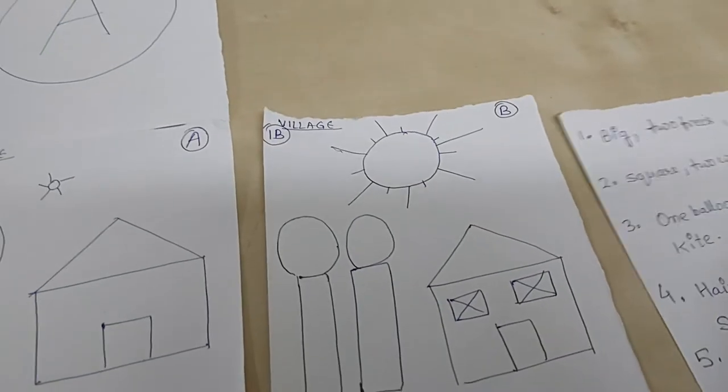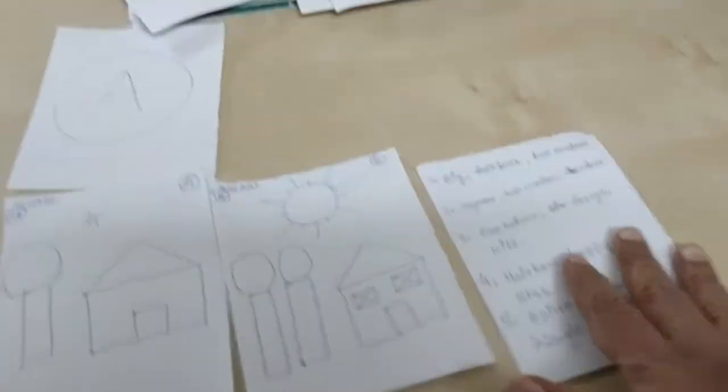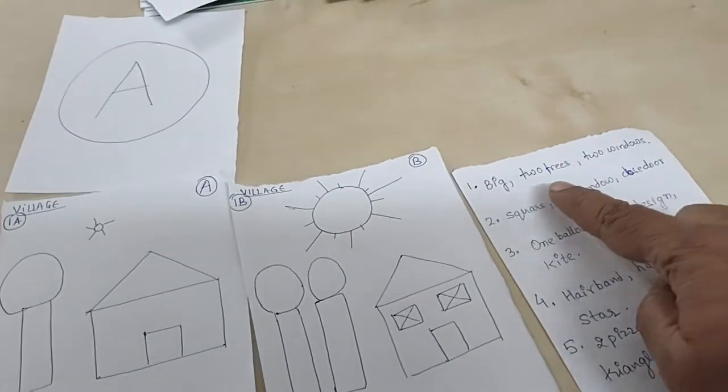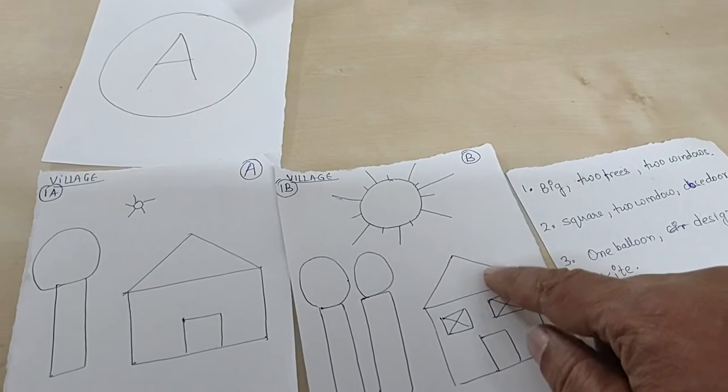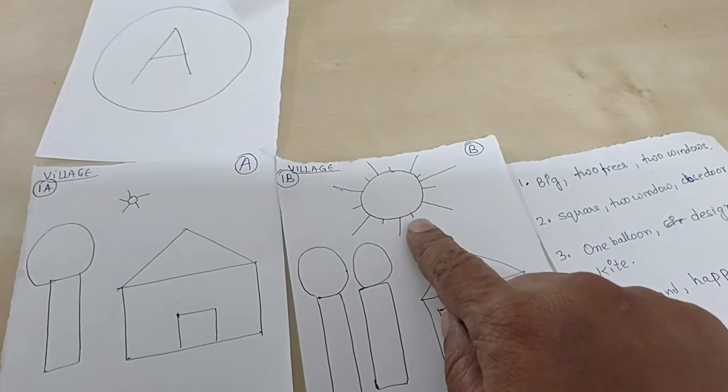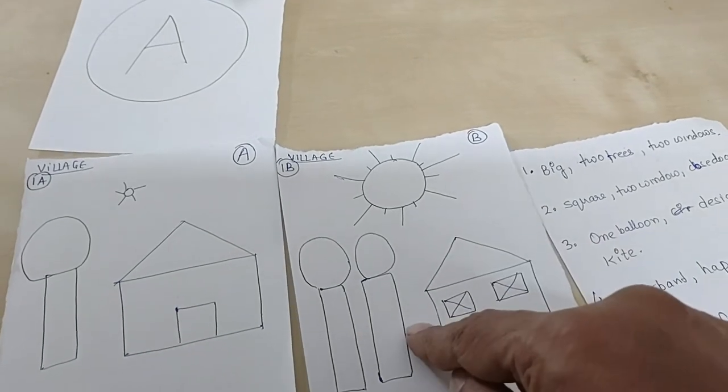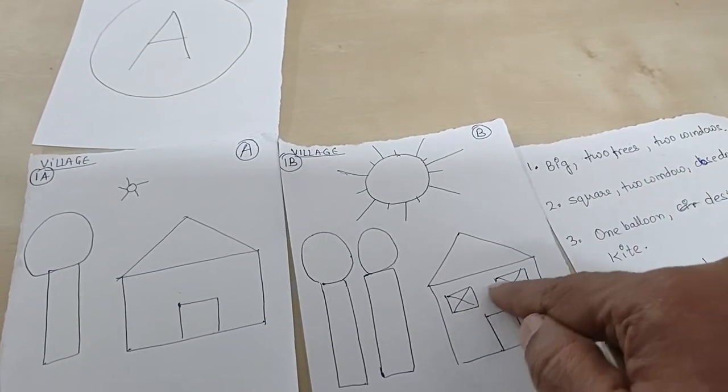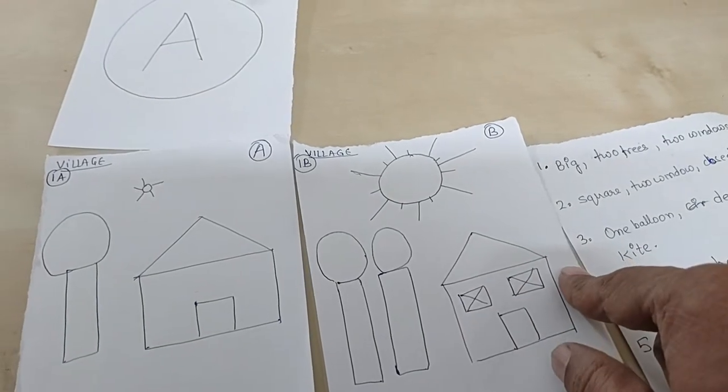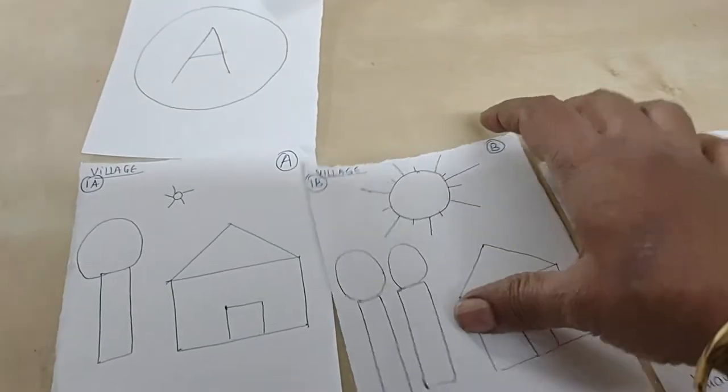And this is a prompt card so that my verbal prompt is minimum. The child will point here, then he will say B has a big sun, B has two trees, B house has two windows, so that parent prompts will be minimum with the child.